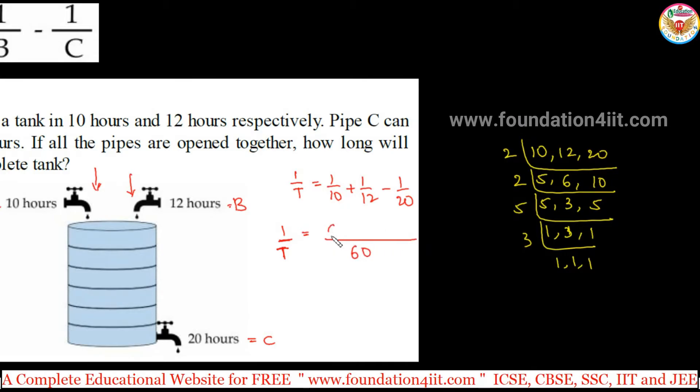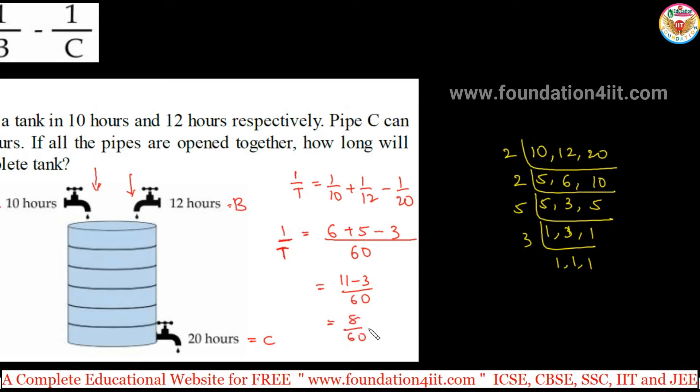60 divided by 10 is 6 times, plus 60 divided by 12 is 5 times, minus 60 divided by 20 is 3 times. So 6 plus 5 is 11, minus 3 is 8, over 60. 11 minus 3 is 8, so 8 divided by 60, which equals 1/T.